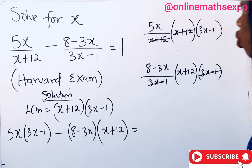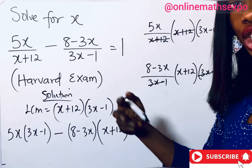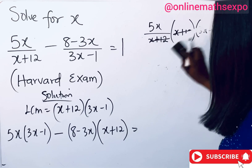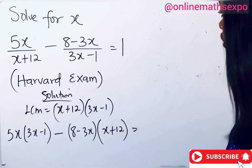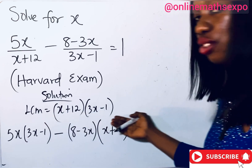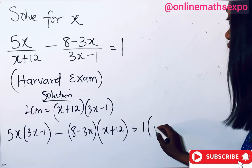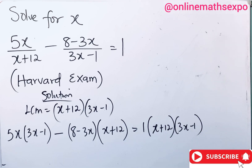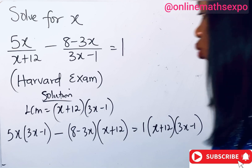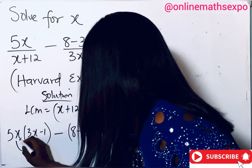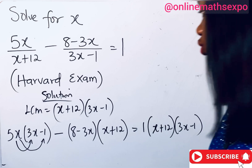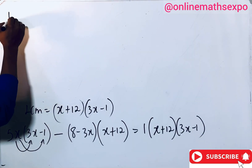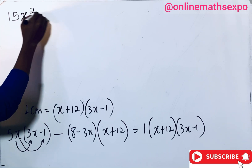Whatever we do to the left side we do to the right side to keep the equation balanced. So on the right side, multiply 1 by the LCM: 1 × (x + 12)(3x − 1). Now let's expand the left side. Multiplying 5 by (3x − 1): 5 × 3x gives us 15x², and 5 × (−1) gives us −5x.